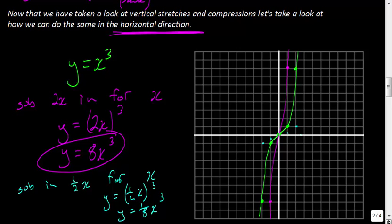If you were to go over a couple more — over 4, 4³ = 64. What is 1/8 of 64? It's 8 right here. And so hopefully you'll see something happening in the horizontal direction. We'd have a cubic function that looks like that.